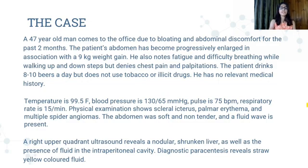The patient's abdomen has become progressively enlarged in association with a 9 kg weight gain. He also notes fatigue and difficulty breathing while walking up and down the steps, but denies chest pain and palpitations. The patient drinks 8 to 10 beers a day, but does not use tobacco or illicit drugs, and has no relevant medical history.